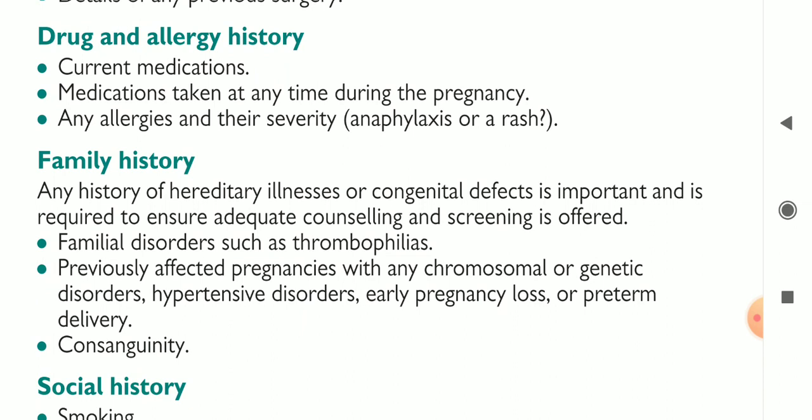Drug and allergy history includes current medications, medications taken at any time during the pregnancy, and any allergies and their severity — for example anaphylaxis or rashes. Family history of hereditary illnesses or congenital defects is important and required to ensure adequate counseling and screening is offered.